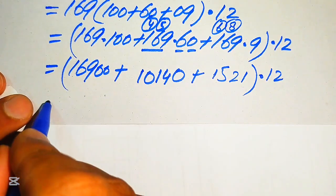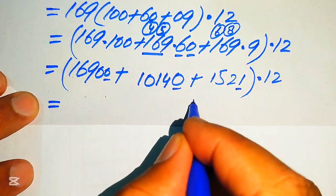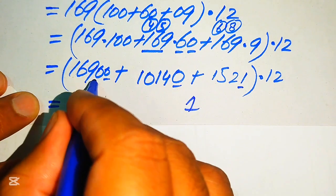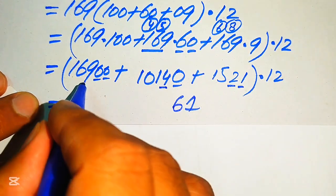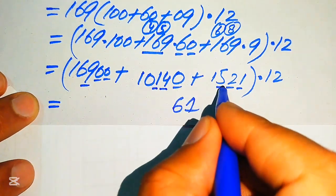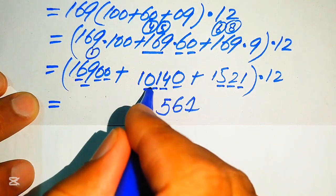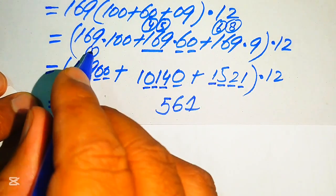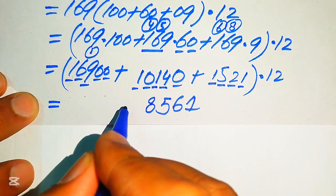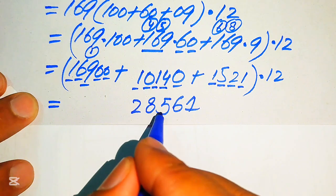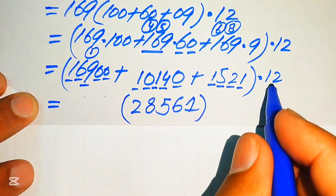We sum up the three partial products: 16900 + 10140 + 1521. Adding column by column: units 0+0+1=1; tens 0+4+2=6; hundreds 9+1+5=15 (write 5, carry 1); thousands 6+0+1+1=8; ten-thousands 1+1=2. The result is 28561.